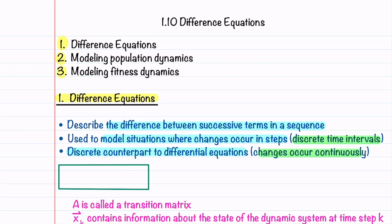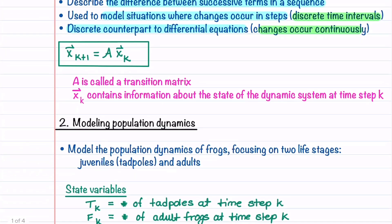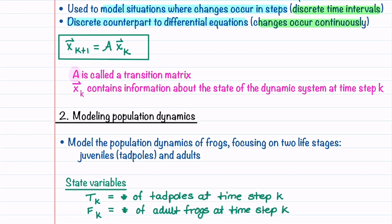The discrete time interval could be a day, a month, a week, a year, or any other type of time interval. A difference equation can be written as vector x_{k+1} = A * x_k, where A is called a transition matrix and x_k contains information about the state of the dynamical system at time step k. Let's now see how difference equations can be used to model population dynamics.